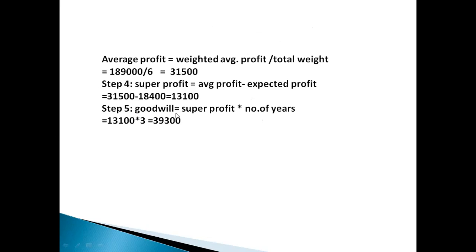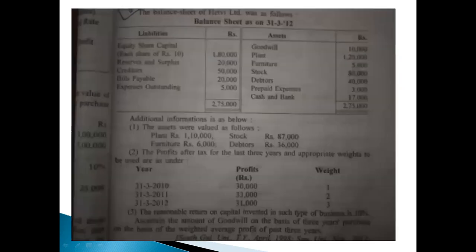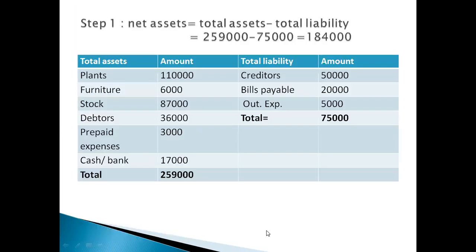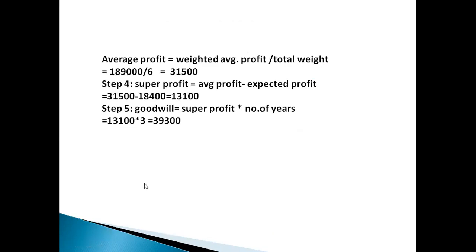Step 5: goodwill is equal to super profit multiplied by number of years. The amount of goodwill is on the basis of 3 years purchase. Super profit multiplied by 3 years gives the final goodwill amount.